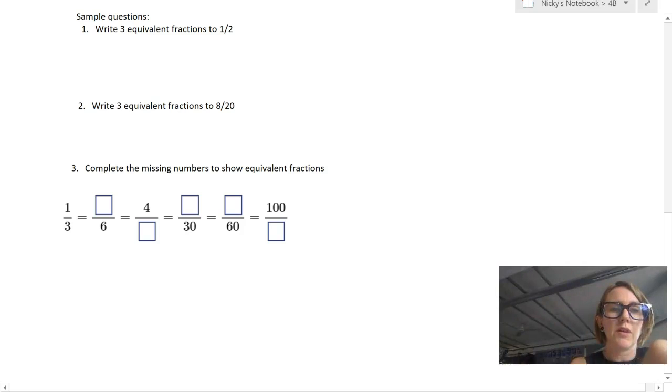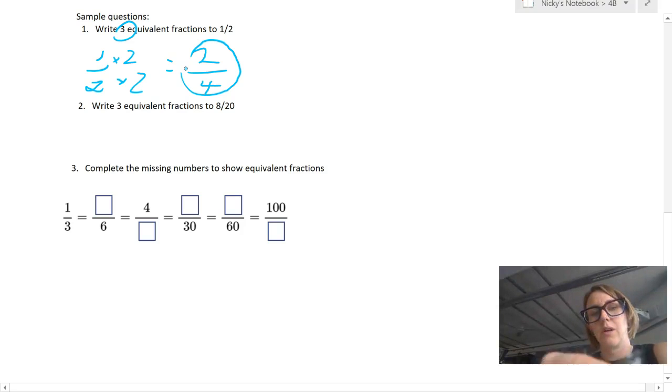So I could choose to multiply the numerator and the denominator by two. Now it has asked me to find three, so I'm going to just find the first one to begin with. So I've got one half as my first fraction. If I multiply the top and the bottom by two, I get two times one, two, two times two, four.